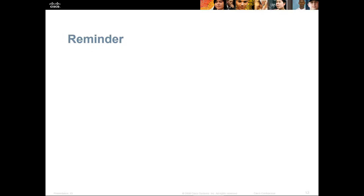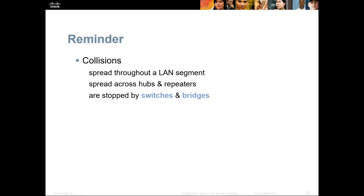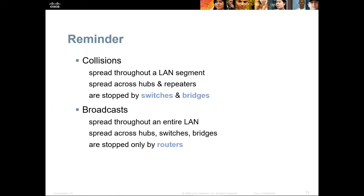As a reminder: collisions spread throughout a LAN segment — they spread across hubs and repeaters but do not cross switches and bridges. Broadcasts spread throughout an entire LAN — they spread across hubs, switches, and bridges — and are stopped only by a router.